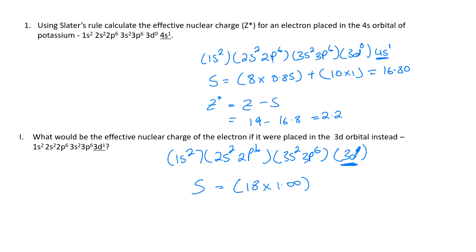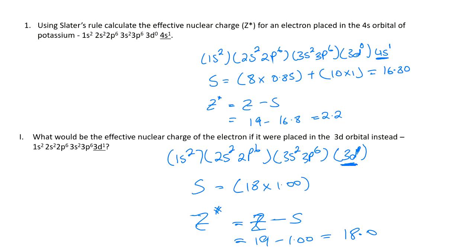Sorry about that — I just joined the session, so I was trying to get everything in place. Cleon says the answer is 1. Yes, the answer is 1, because Z* = Z − S, which is equal to 19 minus 18, which is equal to 1.